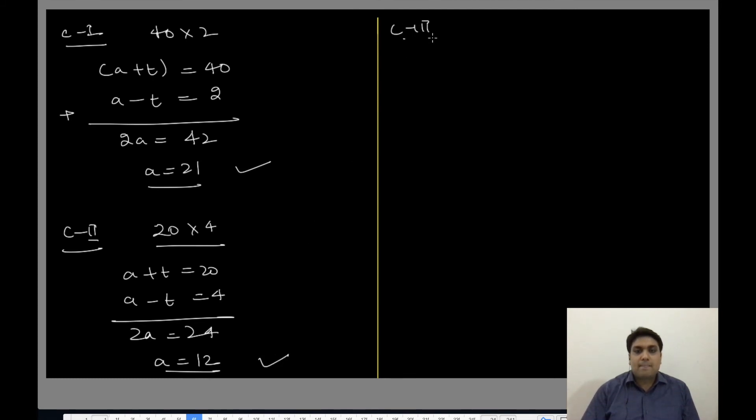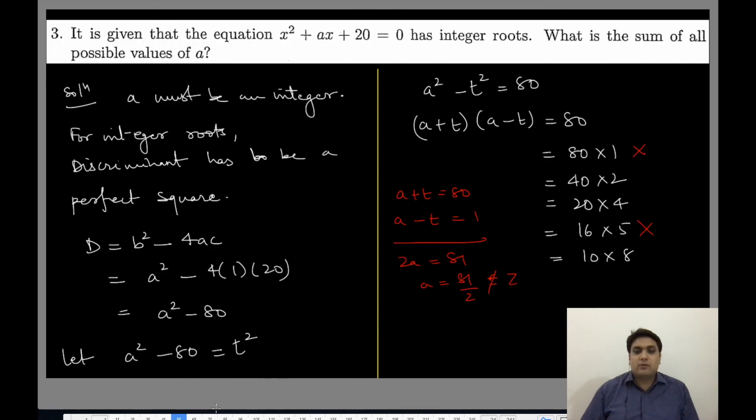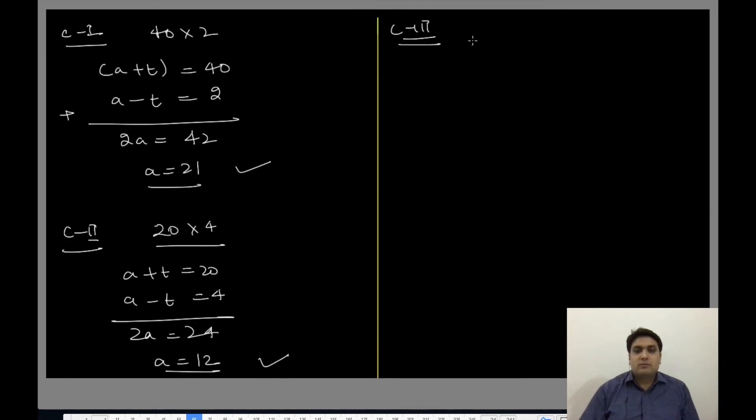Case 3, 10×8: a + t equals 10, a - t equals 8. Again upon adding, 2a equals 18, a equals 9.